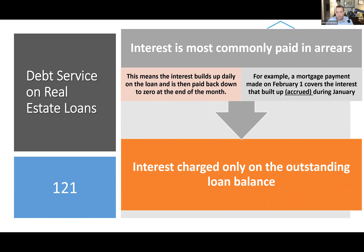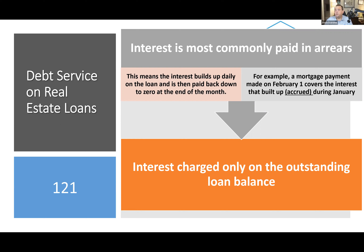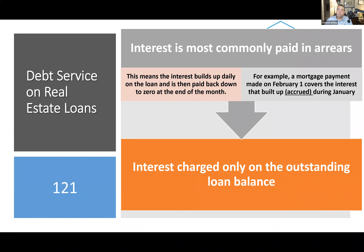Even though the monthly payment stays the same, the interest being paid month after month is not going to stay the same, even if the interest rate stays the same. The dollar amount of interest will be different each month because your loan balance has gone down, so you're paying interest on a lower loan amount. Interest builds up daily, and interest that has built up daily is called accrued interest.